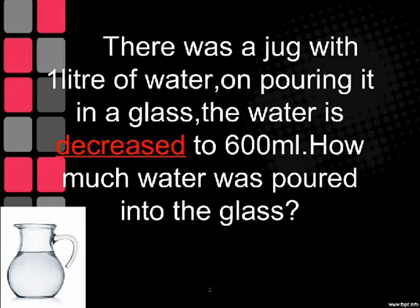Decreased by. There was a jug with 1 liter of water. On pouring it in a glass, the water decreased to 600 milliliters. How much water was poured into the glass?